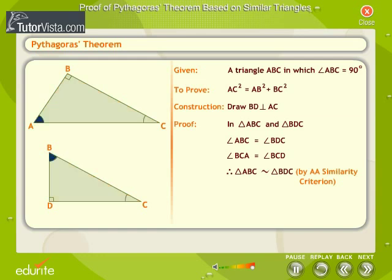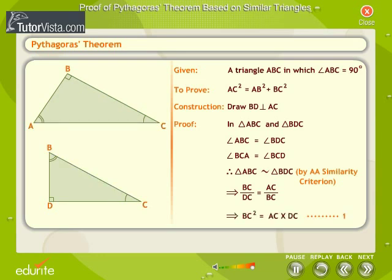It follows that angle BAC is equal to angle DBC. The side corresponding to angle BAC is BC, and the side corresponding to angle DBC is DC. The side corresponding to angle ABC is AC, and the side corresponding to angle BDC is BC. The corresponding sides of similar triangles are proportional. Therefore, BC over DC equals AC over BC. By cross multiplication, BC squared equals AC into DC. — Equation 1.